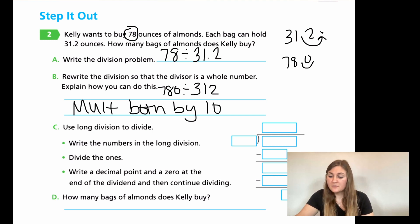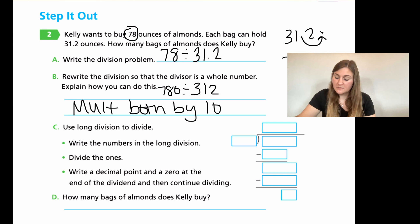Now for C, it says, use the long division table, write the numbers in the long division. So I am going to be dividing 780 and I'm going to be dividing it by 312. I know that dividing by 312 seems like a lot, but really we're just going to be estimating and we will figure this out because it's just about 300 into 700, which we'll be able to figure out. So it just says divide the ones. So that's all we're doing. So 312, does it go into seven? No. Does it go into 78? No, but it does go into 780, right? So I have about 300 ish into 800 ish.